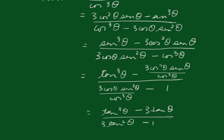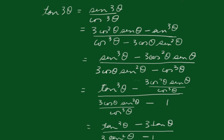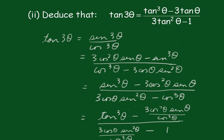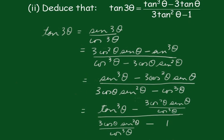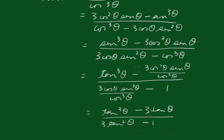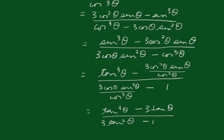And if you look back, we get tan3θ equals (tan³θ − 3tanθ) over (3tan²θ − 1), which is the required result.